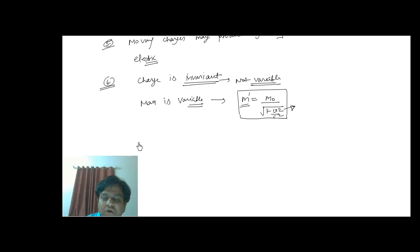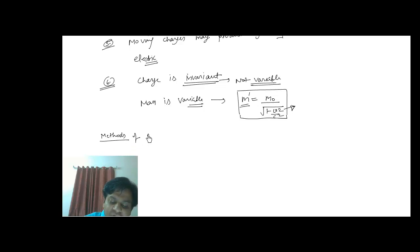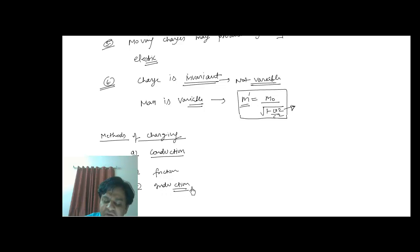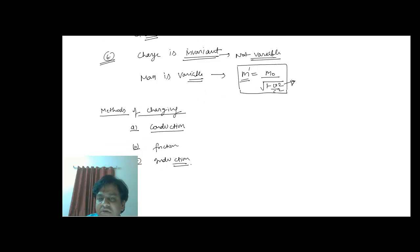So those were the main properties of charges. Now let's talk about the methods of charging. There are mainly three methods for an object to get charged: first is conduction, second is friction, and the third is induction. We will deal with each of these modes of charging at later stages one by one.